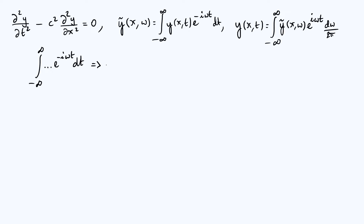That's a result I derived in my last video, so you can have a look at that if you're interested. But basically what that means in practice is that the first term in our partial differential equation, d²y/dt², in Fourier space is just going to be i omega squared times y-tilde of x and omega. This is why Fourier transforming differential equations is useful — it turns derivatives into just multiplication.